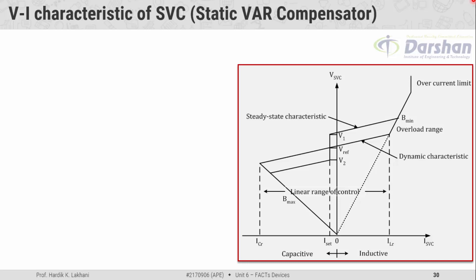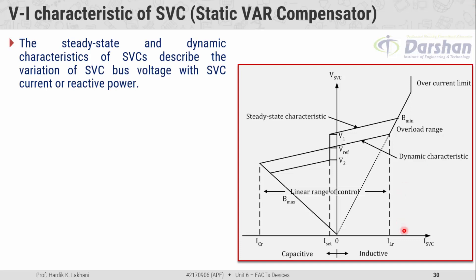This is the VI characteristic of the volt ampere reactive compensator. On the x-axis, the parameter is the current through the SVC, and on the y-axis the parameter is the voltage. The steady state and dynamic characteristic of SVCs describe the variation of SVC bus voltage with SVC current or reactive power, giving us information about the variation of voltage across the shunt connected FACTS controller over the variation of current through it.